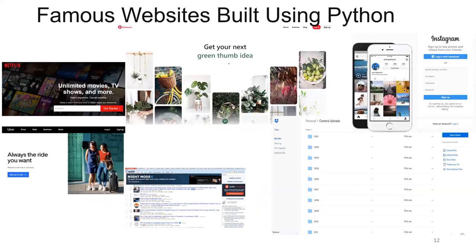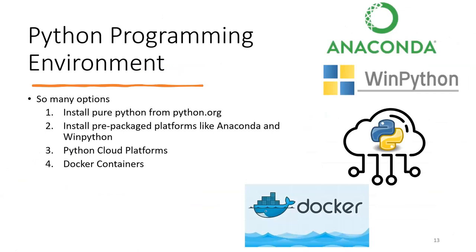Here is a list of famous websites built using Python: Instagram, Pinterest, Netflix, Uber — people know these applications but often don't know they were made with Python. You also have the social network Reddit, and Dropbox, the web application — all made with Python.